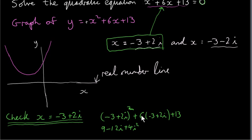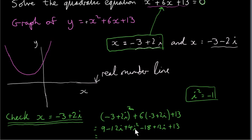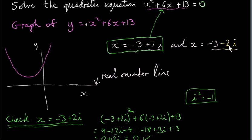Next, multiply 6 into minus 3 plus 2i: 6 times minus 3 is minus 18, and 6 times plus 2i is plus 12i. Then copy down plus 13. Now, i squared is minus 1, so plus 4i squared becomes plus 4 times minus 1, which is minus 4. Gathering real parts: plus 9 minus 4 is plus 5; plus 5 minus 18 is minus 13; minus 13 plus 13 is 0. For imaginary parts: minus 12i plus 12i is 0. So the whole expression equals 0, confirming that minus 3 plus 2i is indeed a solution of our quadratic equation. We could do exactly the same for its conjugate and also get 0.